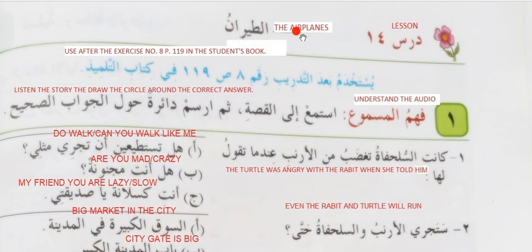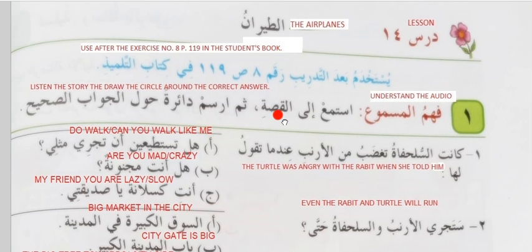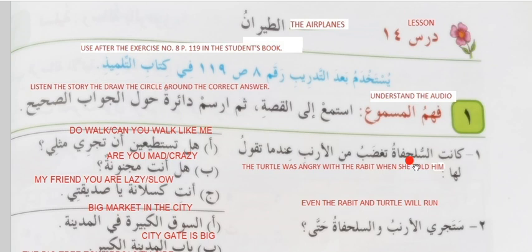Al-Tahranu means the airplanes. Fahum al-Masmuha — understand the audio. Istama, listen, il-qissa, to the story. Then irsim, draw, dairah, circle, hall, around, jawab, answer, sahih, correct. Listen to the story, then draw the circle around the correct answer.